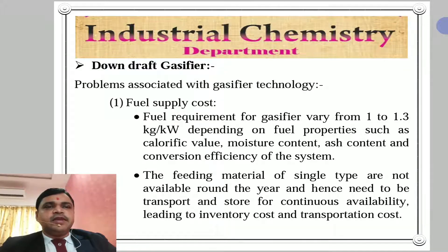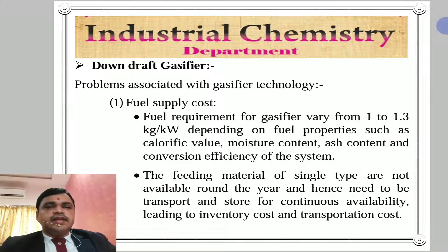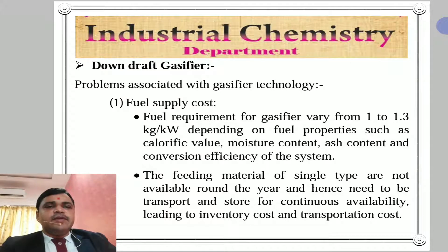Problems associated with downdraft gasifier. Number 1 is fuel supply cost. The fuel requirement for a gasifier varies from 1 to 1.3 kg per kilowatt depending on fuel properties such as calorific value, moisture content, ash content, and conversion efficiency of the system.